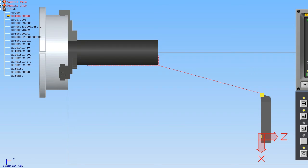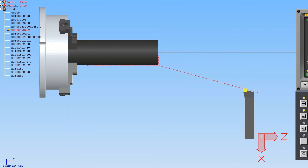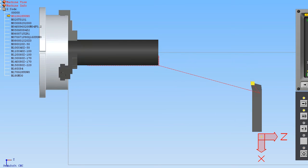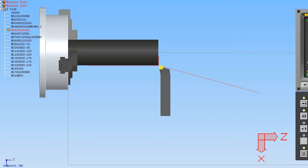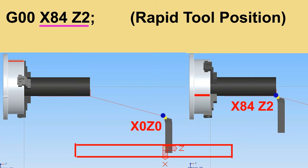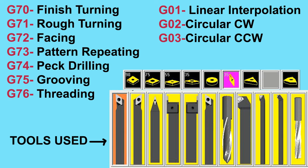In the fifth step we want to bring our tool from the home position to near the workpiece at maximum velocity, running in free air. For that we use the G00 code — that is rapid traverse.